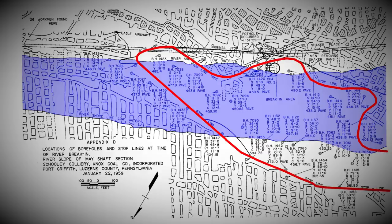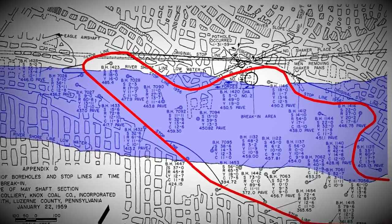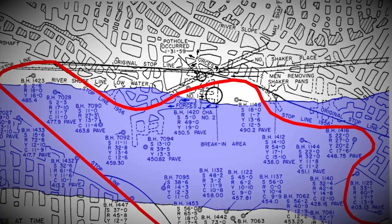The Knox Coal Company requested a 35 foot margin which government officials approved. This wouldn't be enough and eventually the company would keep pushing the boundaries to chase the anthracite veins until the point of no return.